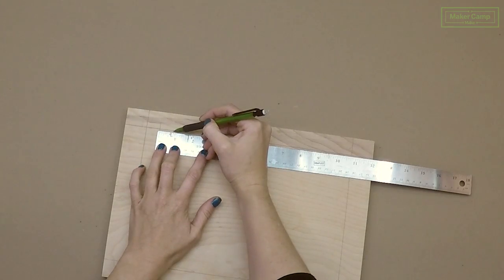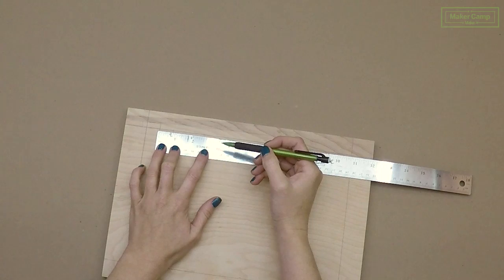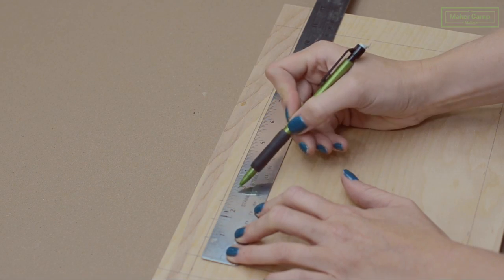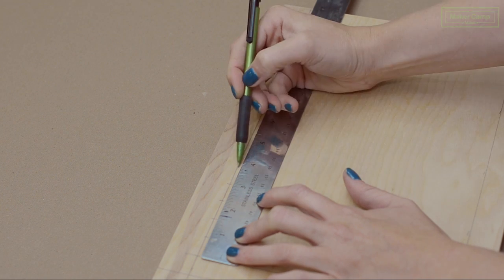Now we're going to mark our nailing grid. First we're going to start with our horizontal marks which we're going to space three quarters of an inch high. Just start from the top of your board and work your way down.